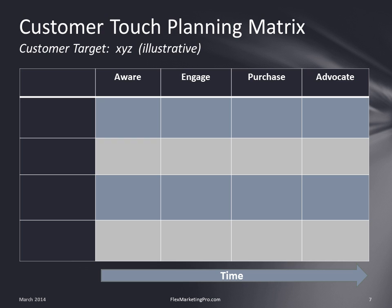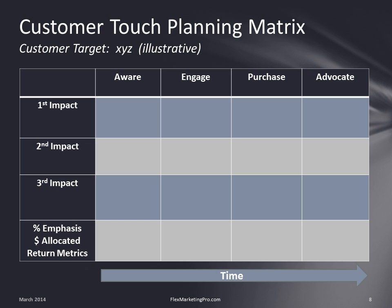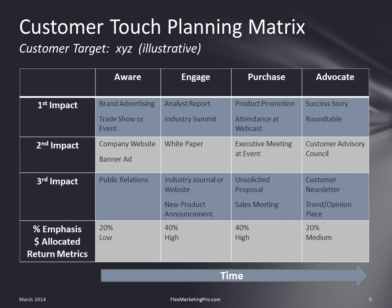Here is an illustrative customer touch planning matrix. On the horizontal axis, we have steps in the purchase decision cycle over time. On the vertical axis, we have the number of planned impacts or surgical strikes against our target audience. The goal is to implement the right elements, in the right proportion, in the right sequence, to yield maximum return for our precious marketing investment. Here's some sample data to get you thinking.